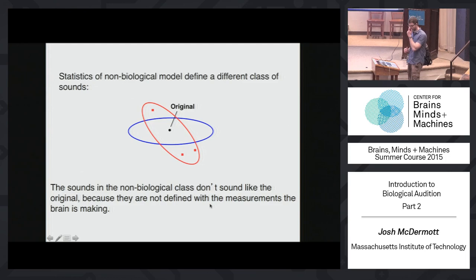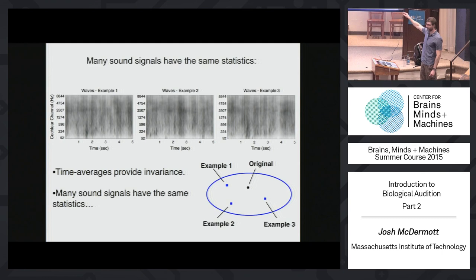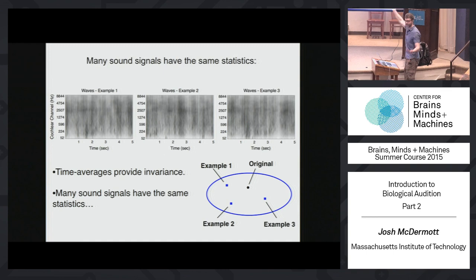When synthesizing from statistics of a non-biological model, the set is different, and those sounds don't sound like the original because they're presumably not defined with the measurements the brain is making. You can see the result of synthesizing from the statistics of a particular recording of waves — three different examples that are all different, with peaks and amplitude in different places, but they all kind of look the same in that they have the same textural properties. That's what's supposed to happen.